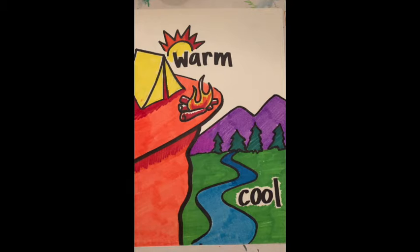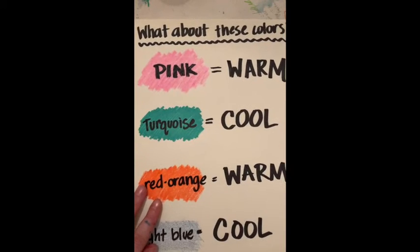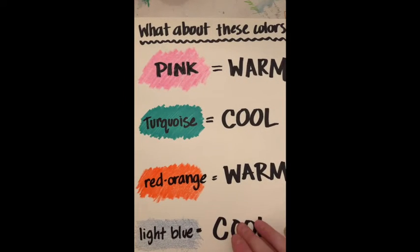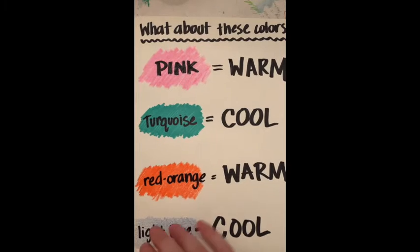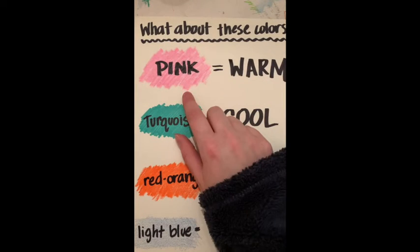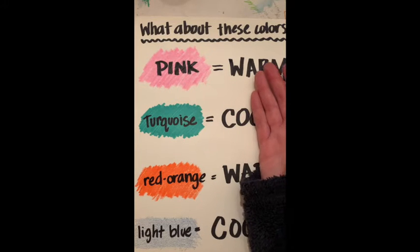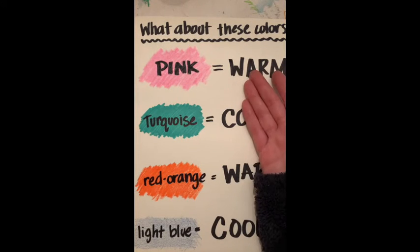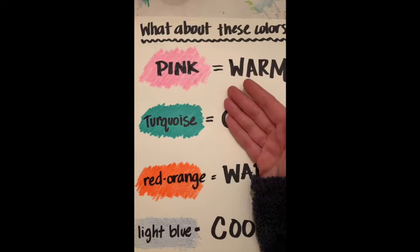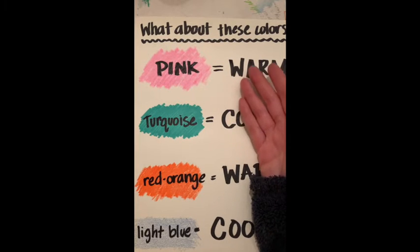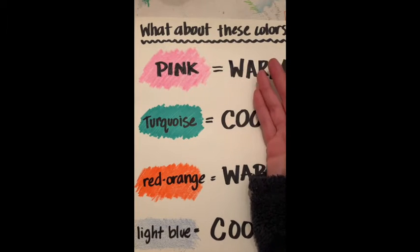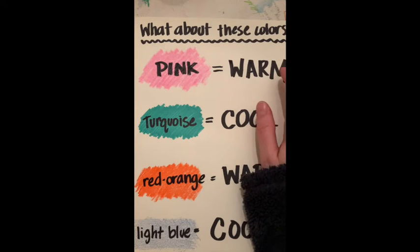You might be wondering about some other colors. A color like pink would be warm because pink is red mixed with white, and red is a warm color. If you have a warm color that's lighter, like light orange, light red, or light yellow, those are still warm. Even a dark red, dark orange, or dark yellow is still warm.